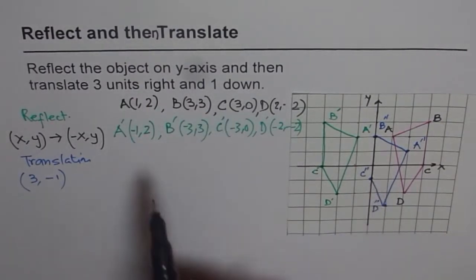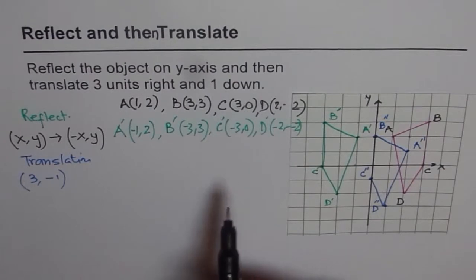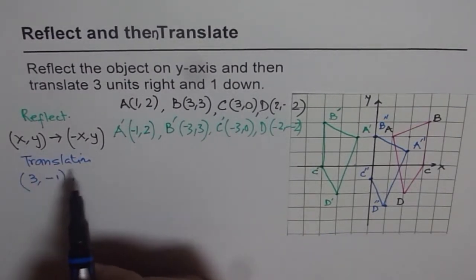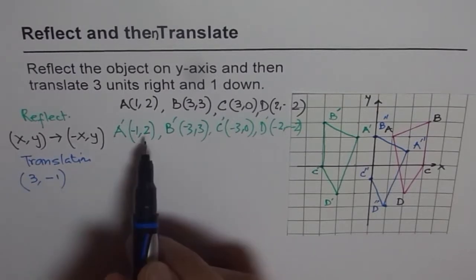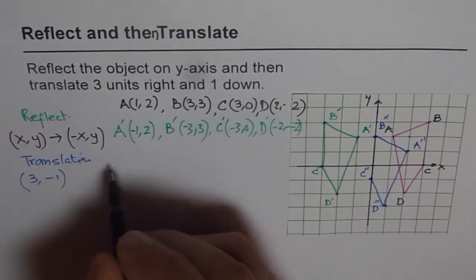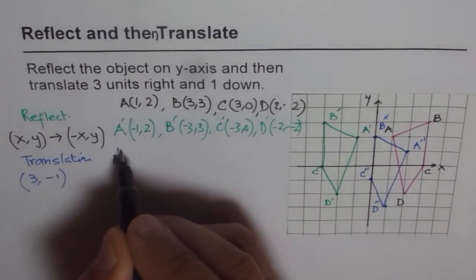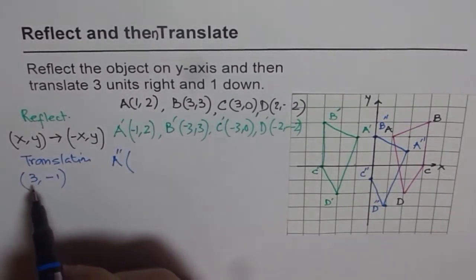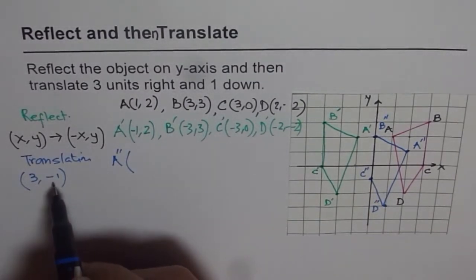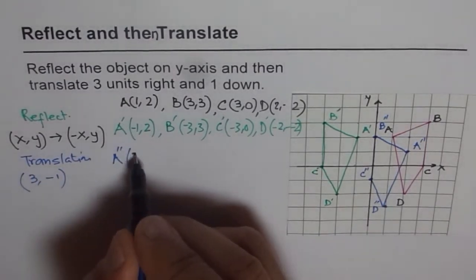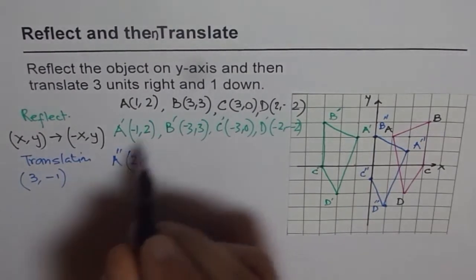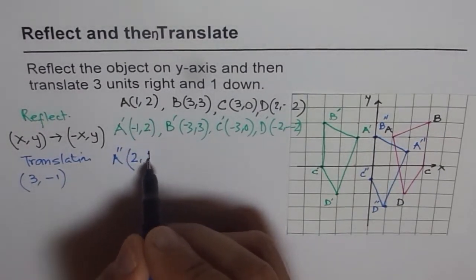So that becomes our object final location after the second transformation which was three units right and one down. Now we will do using the coordinate points and check did we really get the right answer. So whenever you do translation, you actually add those numbers with X and Y original, right? Original means from where you started. So A double dash will be, you have to add 3 and take away minus 1. So when you add 3 to minus 1, what do you get? You get 2.